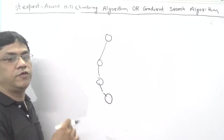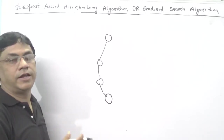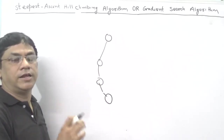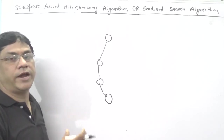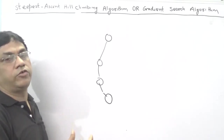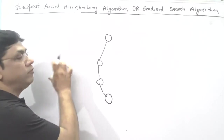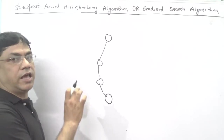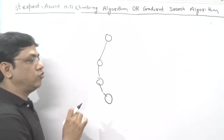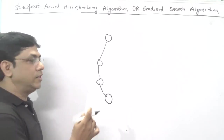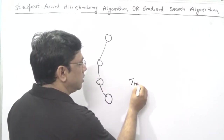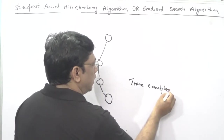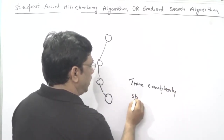Now the question comes: why are we using the Steepest Ascent Hill Climbing Algorithm? In this algorithm, you can find the optimal solution very quickly — that is the advantage and the reason we use this method. But if we use this method, it also has some disadvantages. The time complexity will increase and the space complexity will increase.